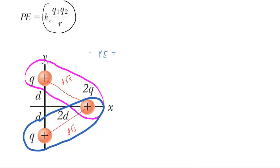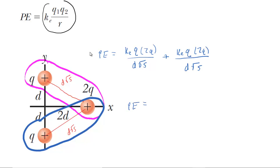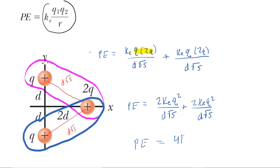For the first pair, we take K_E multiplied by charge Q and then by the other charge 2Q, over the distance D√5. The second pair gives the same expression. Multiplying out the numerators, Q times 2Q is 2Q squared, so each term is 2K_E Q² over D√5. Adding them with the common denominator gives 4K_E Q² over D√5. That is the correct answer for part B.